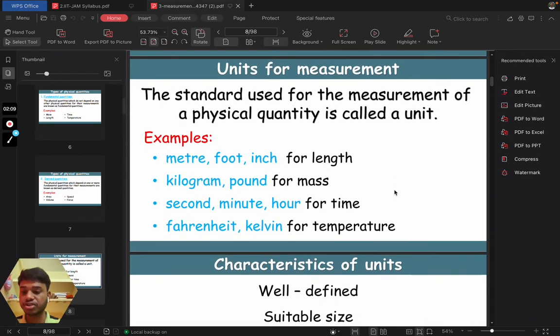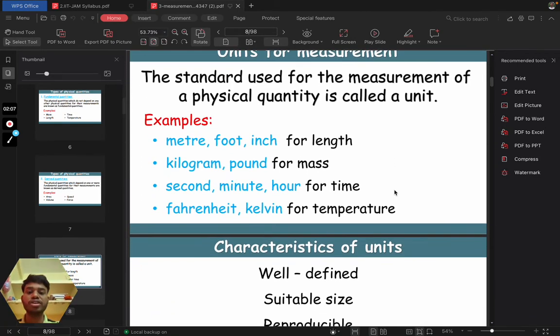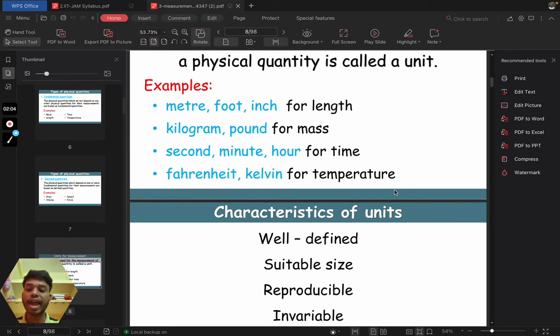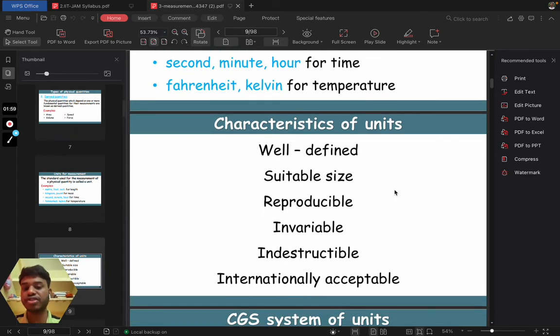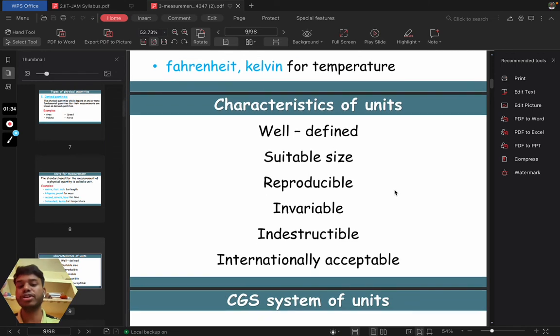There are characteristics of units. Units are well defined. They have suitable size. They are reproducible, invariable, indestructible. You cannot destroy them. And the last but not the least, they have to be internationally acceptable. We are living in modern age, so any unit of any quantity needs to be accepted worldwide only then you can use it. So it is also a very important characteristic of unit.